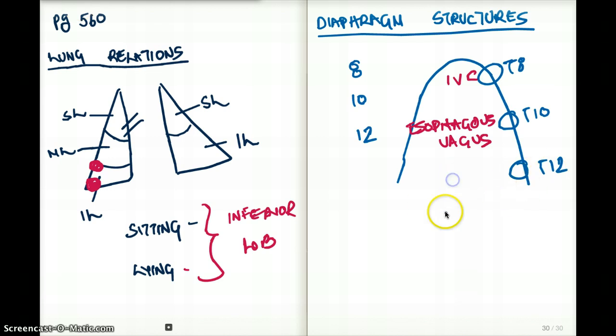And at the level of T12, there is going to be ATA. A is for aorta, T is for thoracic duct, and the other A is for azygous vein.